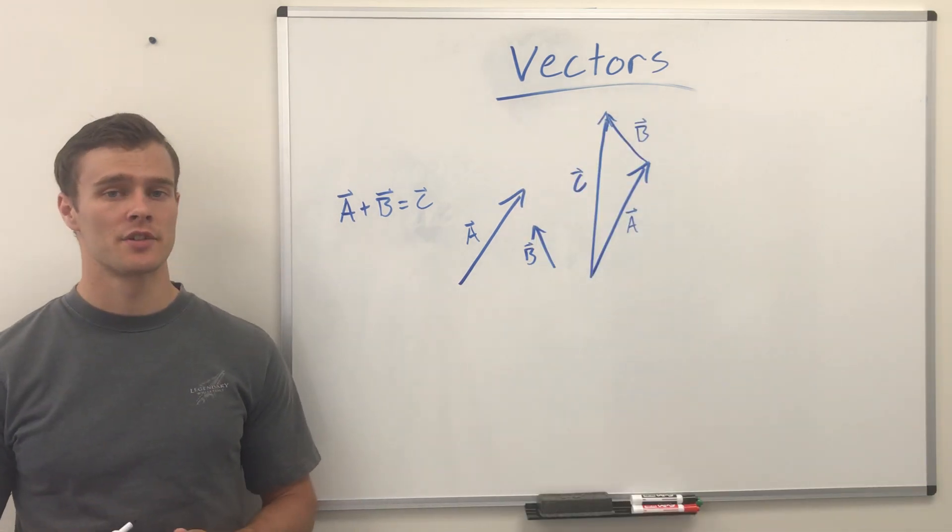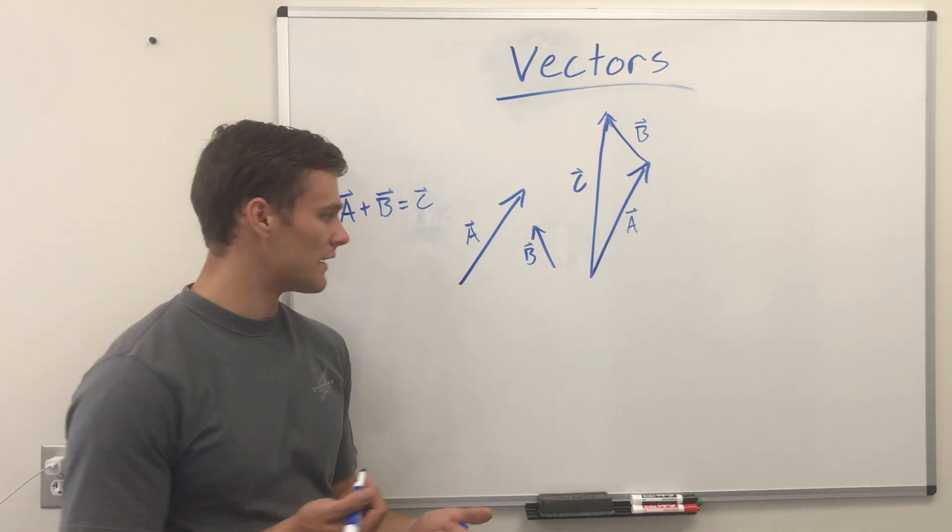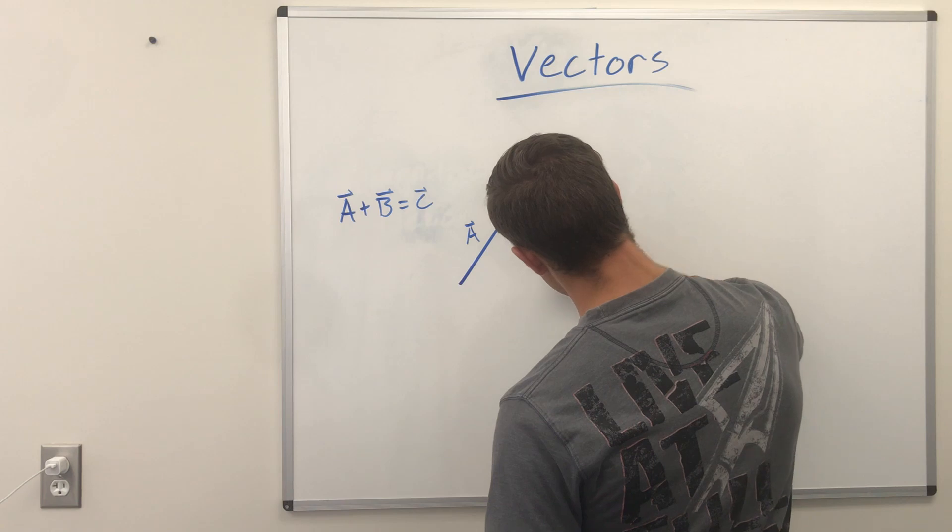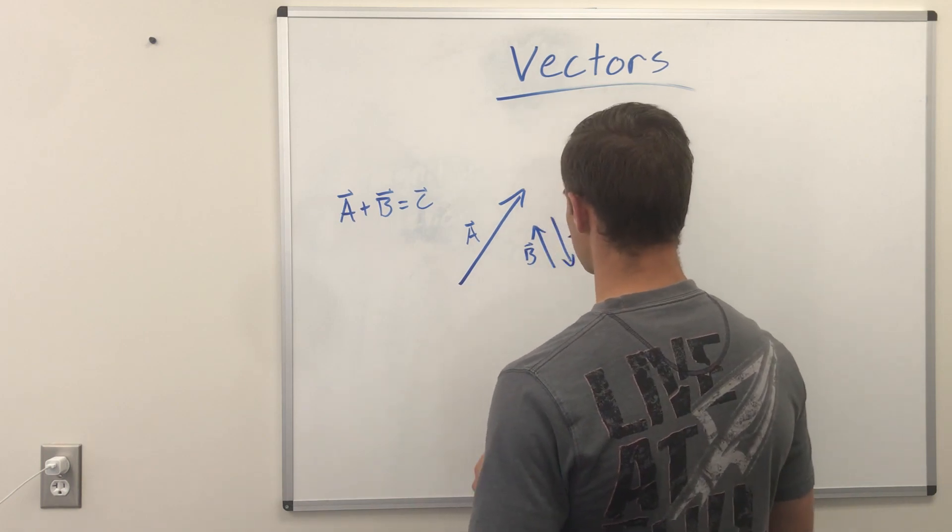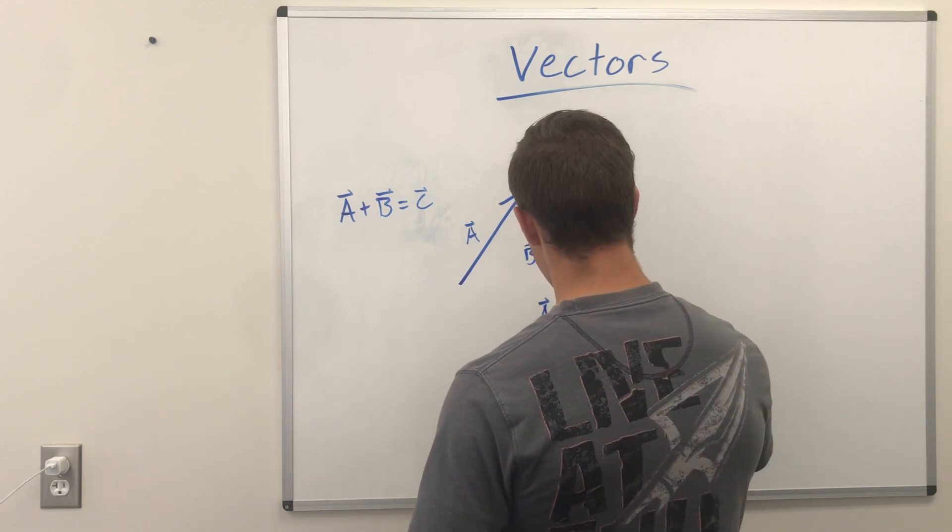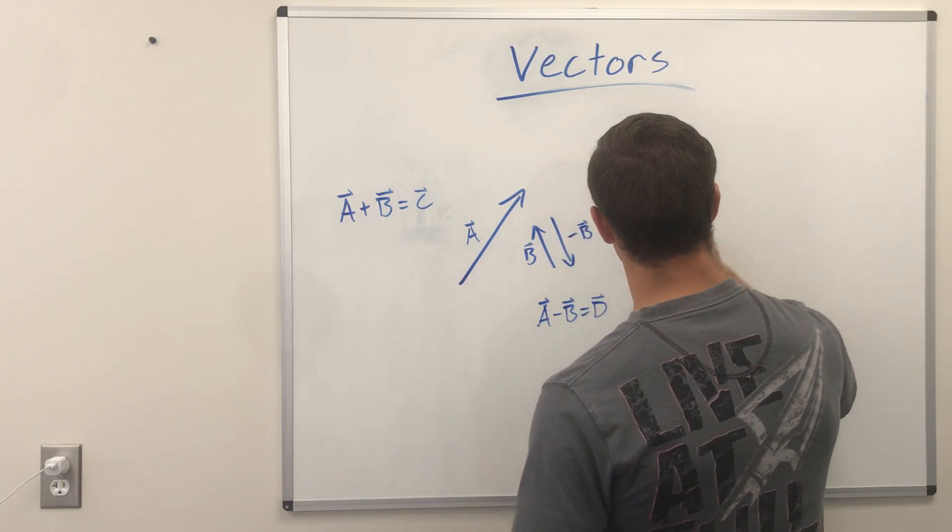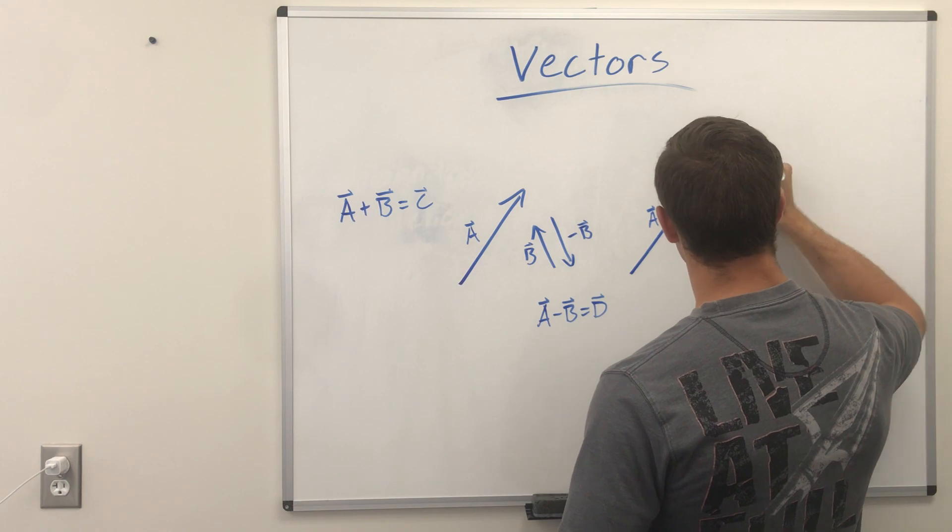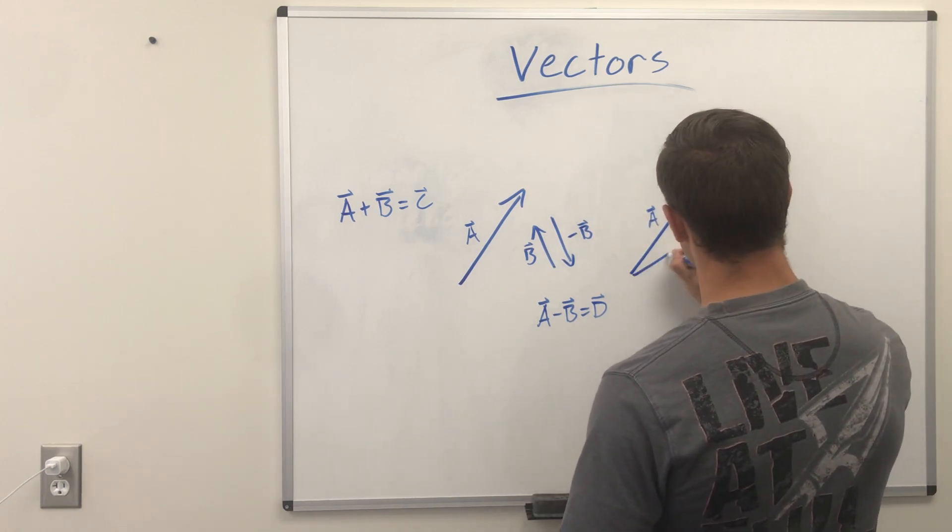Subtraction is very similar to addition. In that we just make the one we're subtracting negative. Say we want negative B. We're just going to draw B going the opposite direction, still going to have the same length, just going in the opposite direction. To subtract them, we'll say A minus B equals vector D. Draw A and negative B, and we'll call the result D.